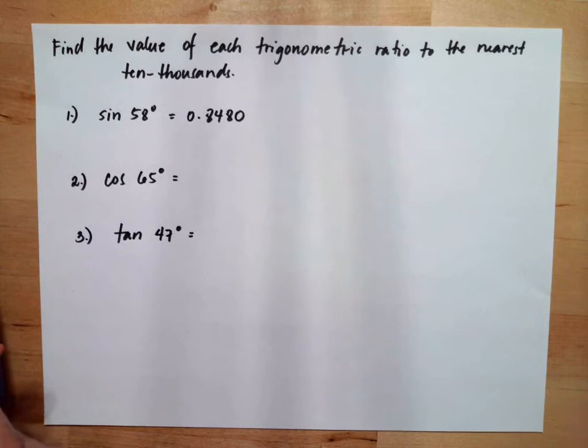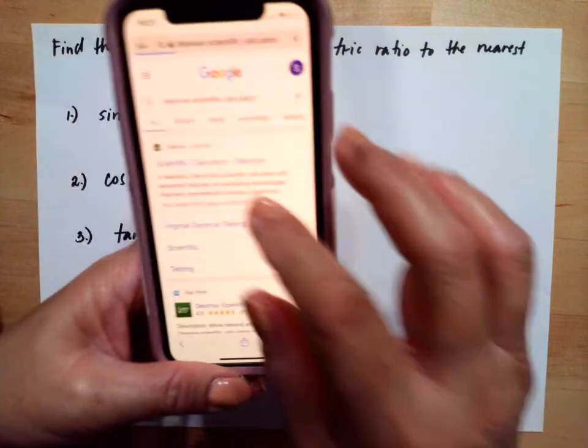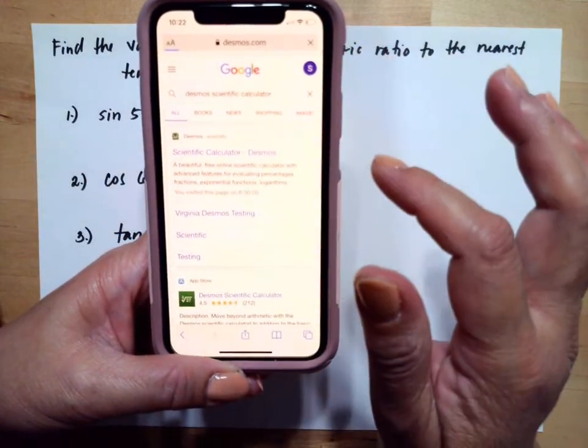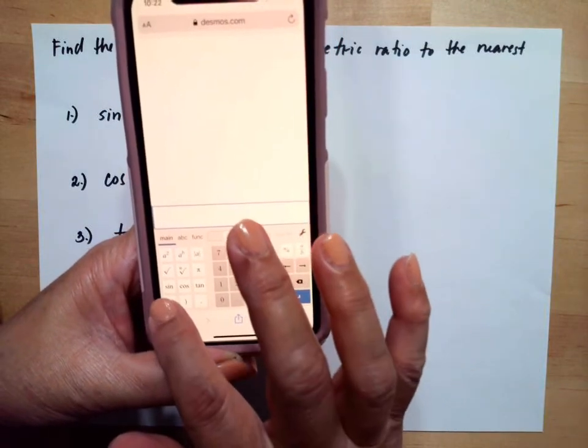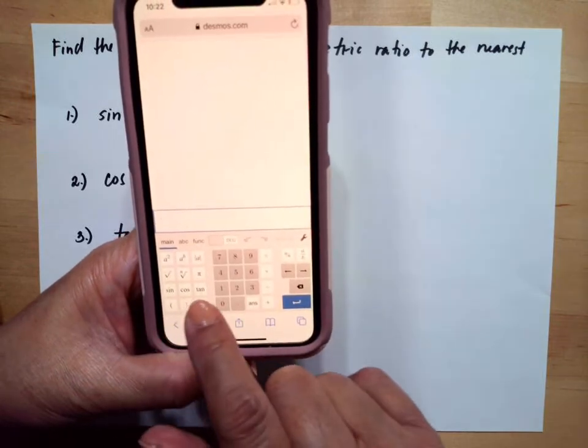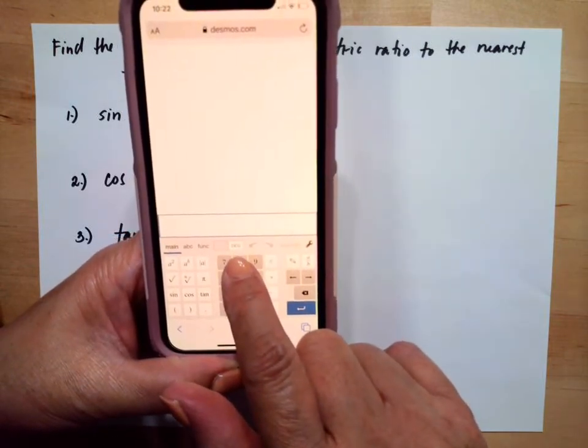You can Google Desmos scientific calculator in your search bar. You click that one, then you see this one. You can do the sine function. There's a sine function button, but be sure that you're in degrees. You see this one is DEG, so therefore it is in degrees.